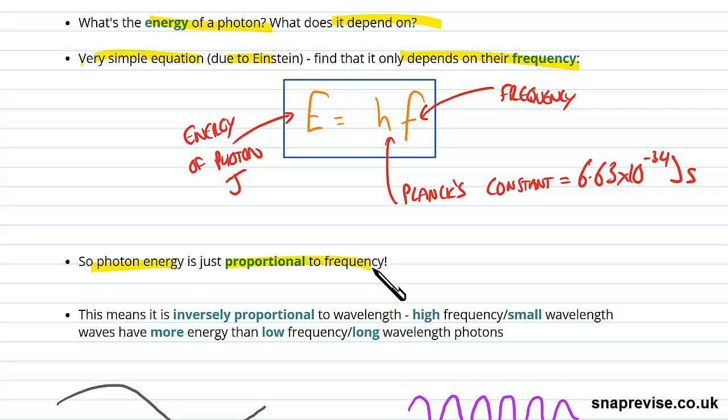Equally, if we wanted to express that in wavelength, we just use that our lambda is given by C, which is the speed of light, divided by our frequency.